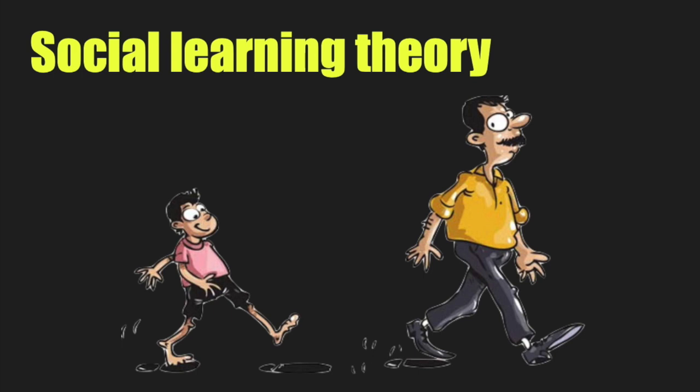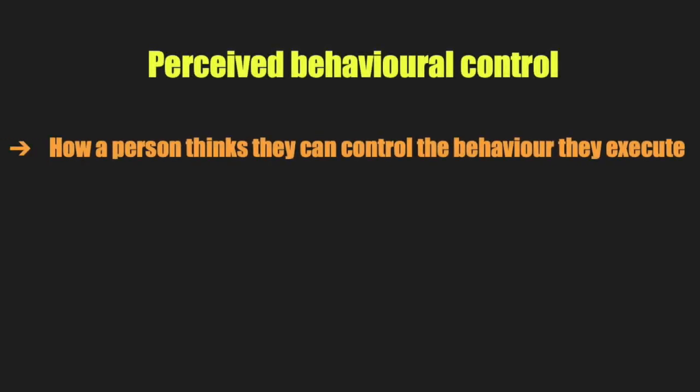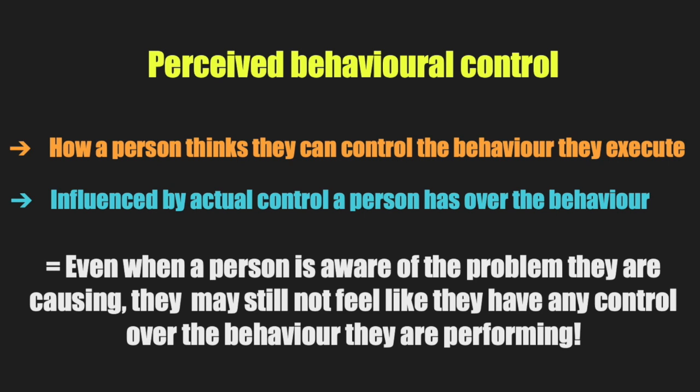During a lecture about the Theory of Planned Behavior, Cook explained perceived behavioral control — the concept of how a person thinks they can control the behavior they execute, which is influenced by actual control a person has over the behavior. So even when a person is aware of the problem they are causing, they still may not feel like they have any control over the behavior they are performing, and especially don't feel like they have control over the environmental impact it has on the earth.